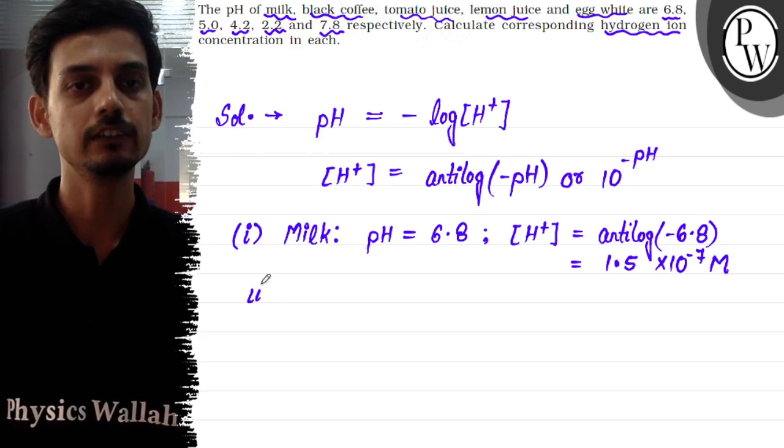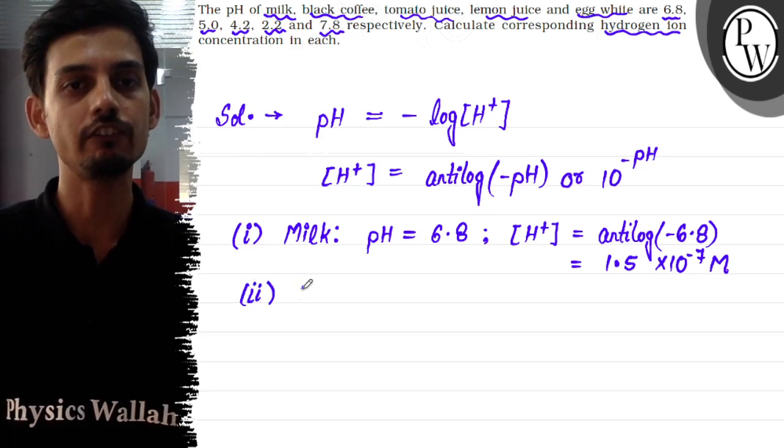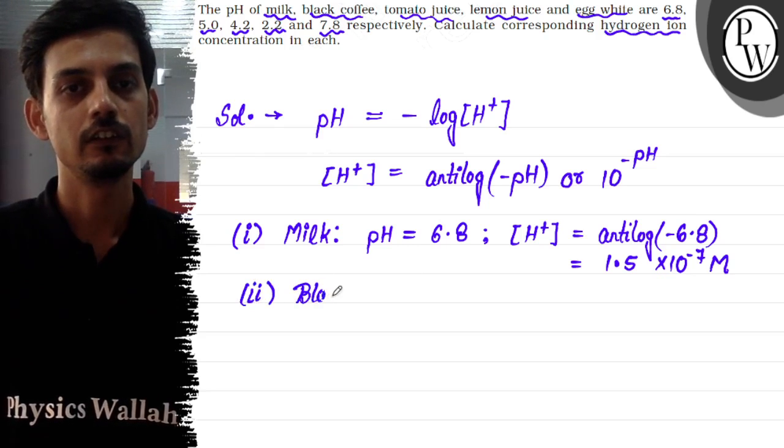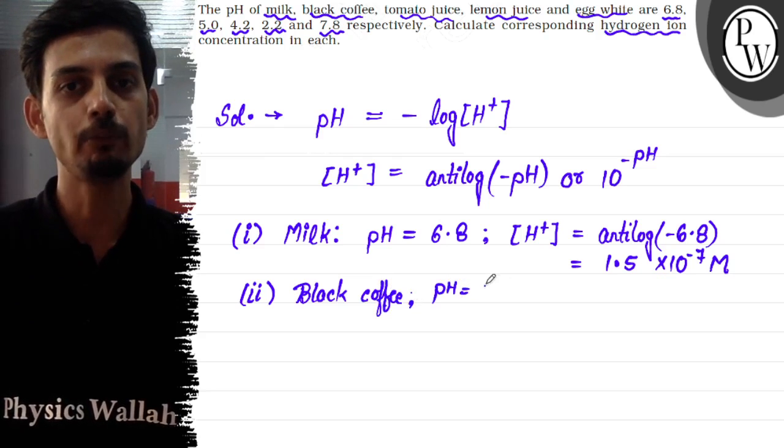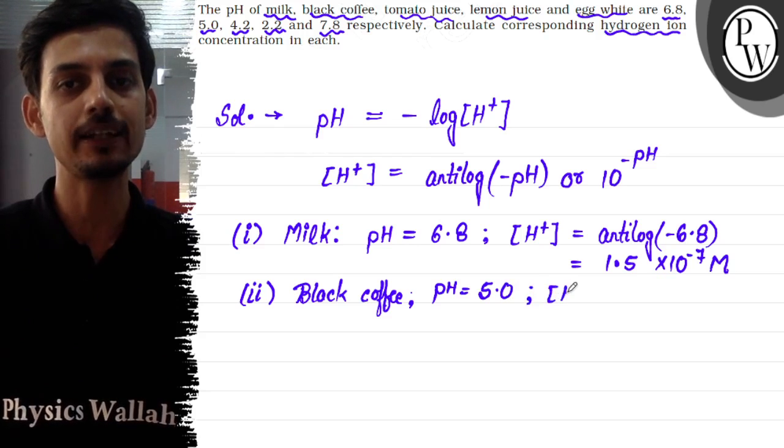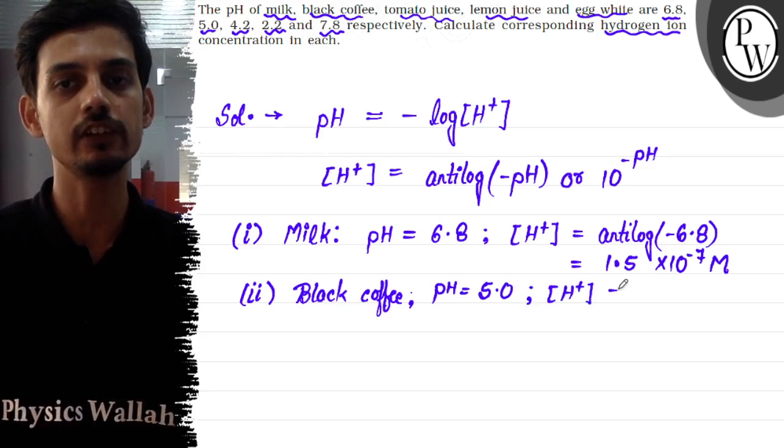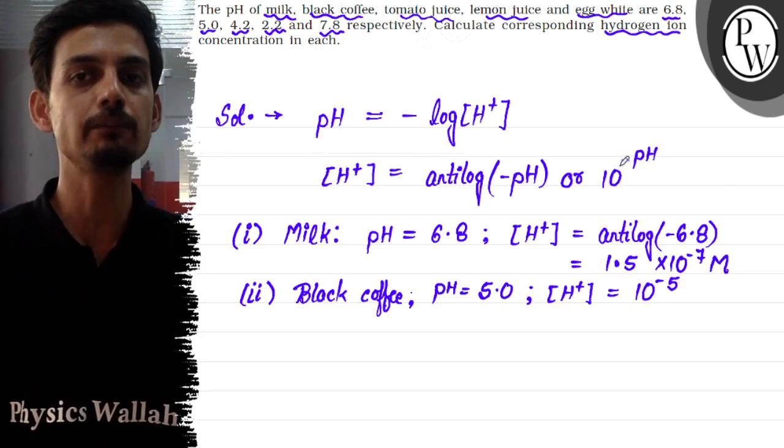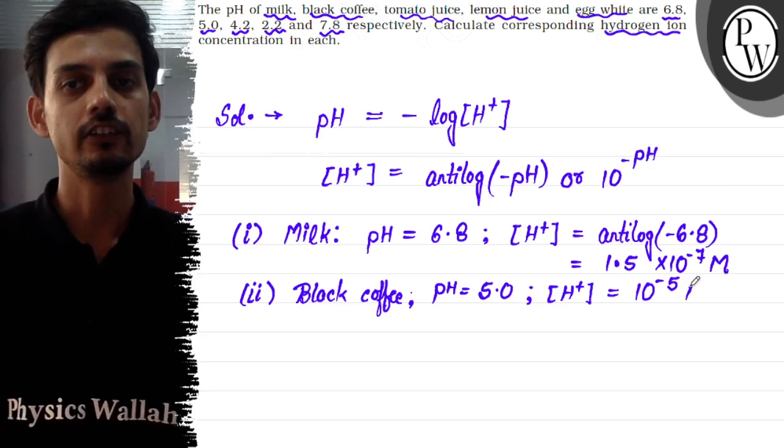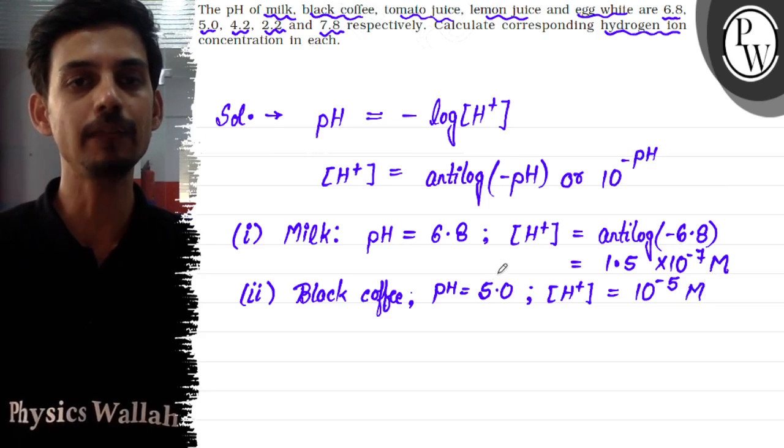Now in the second part, we are given black coffee, whose pH is 5.0. Since the pH value is an integer, the H+ ion concentration will directly become 10 to the power minus 5. So this is the concentration of H+ ion in black coffee.